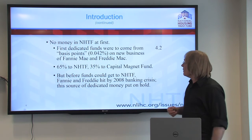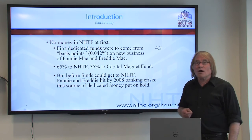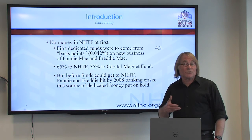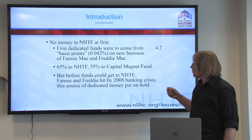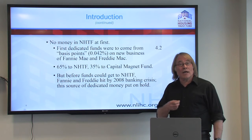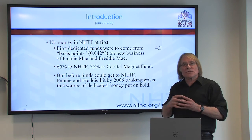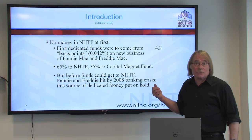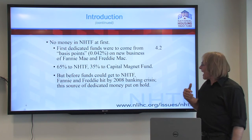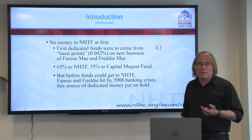Although the Trust Fund was created in 2008, unfortunately no money has gone to it yet. The first dedicated sources of money were to come from an assessment of 4.2 basis points — that is 0.042% — on the new business of Fannie Mae and Freddie Mac, the secondary mortgage markets or government-sponsored enterprises. 65% of that assessment is to go to the National Housing Trust Fund, and 35% to the Capital Magnet Fund. Before the funds could get to the Trust Fund, Fannie Mae and Freddie Mac were hit by the banking crisis of 2008, so this dedicated source of money was unfortunately put on hold.